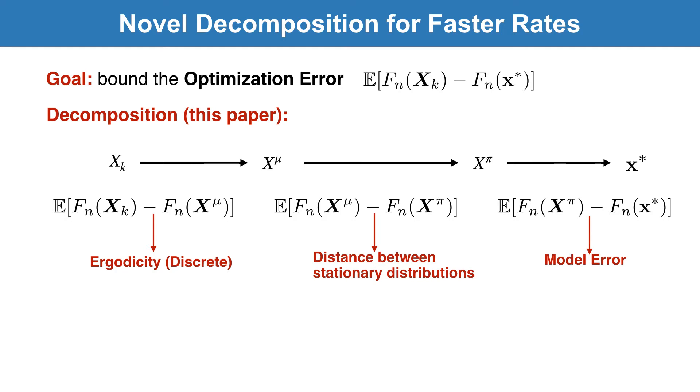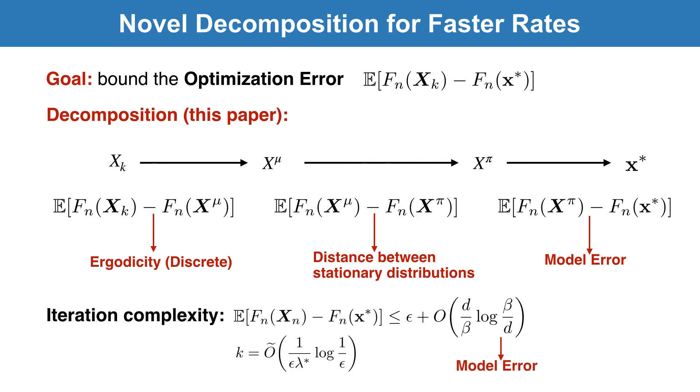Following this decomposition, we proved that GLD converges to the same neighborhood of global minimizer after 1 over epsilon iterations. The key advantage is that we do not need to bound the discretization error, which is a big improvement from the previous results.